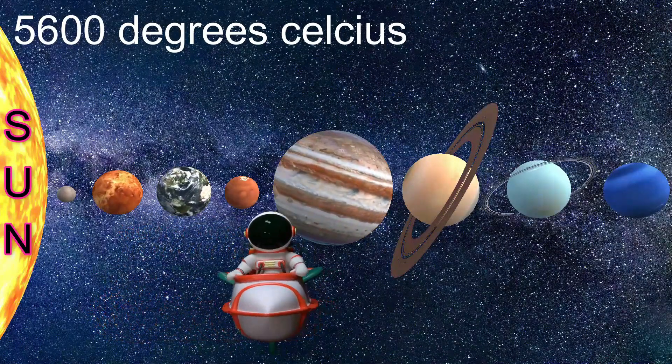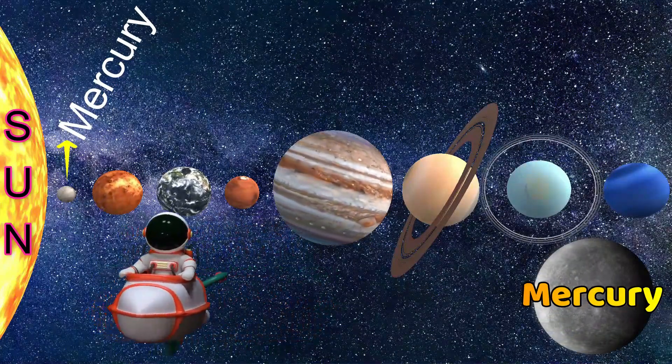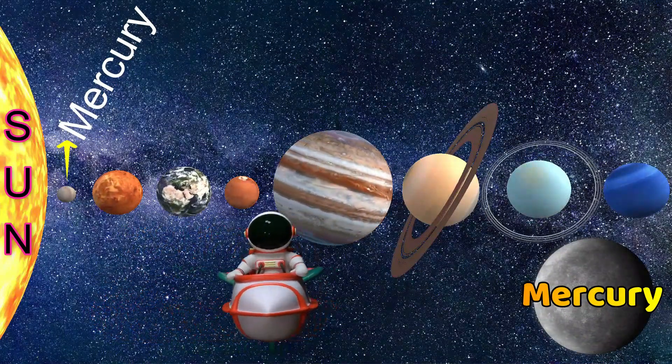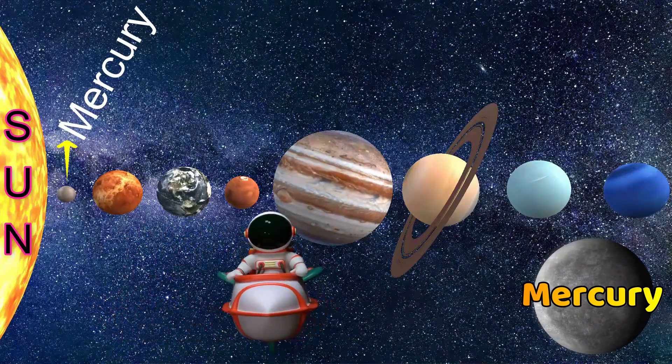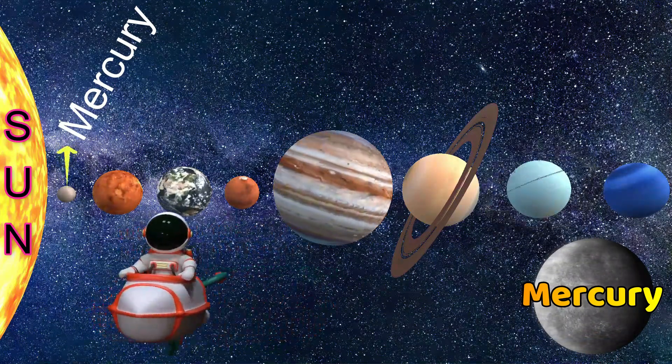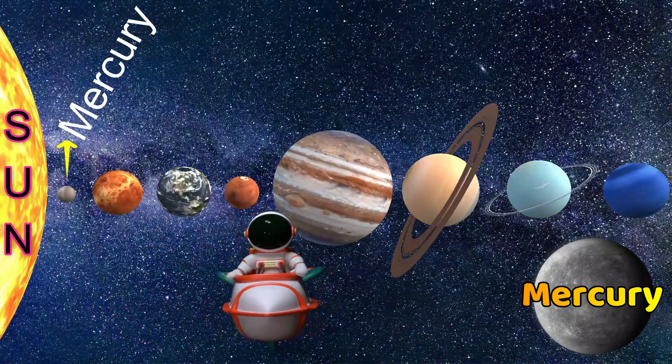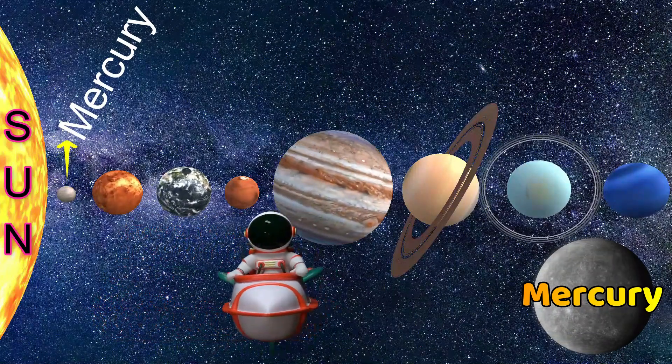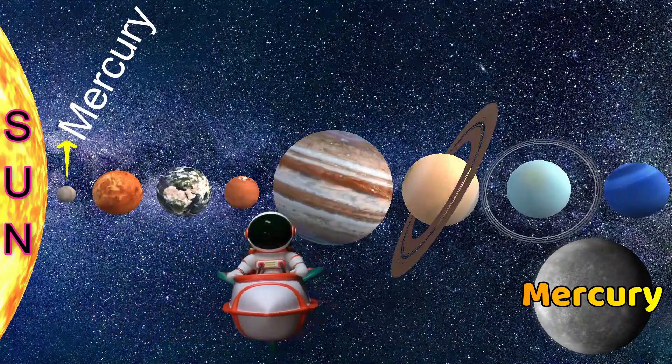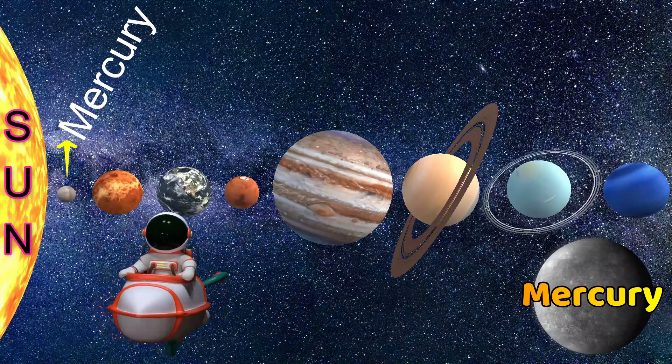The sun's temperature is 5,600 degrees Celsius. The first planet is Mercury, the closest planet to the sun and a very hot planet. This is the smallest planet, friends. There is no water in this planet and gases. There is nitrogen, hydrogen, oxygen, carbon dioxide.